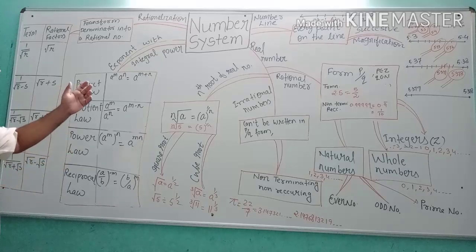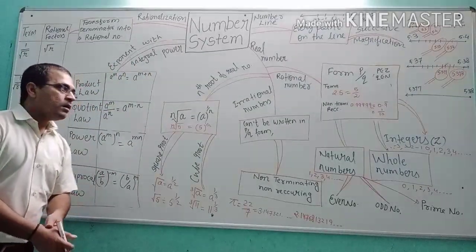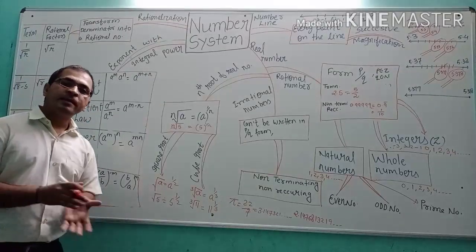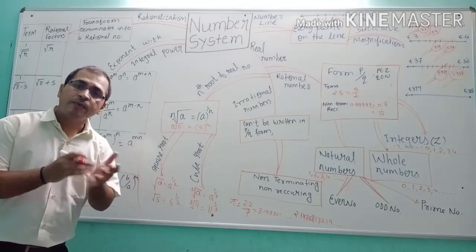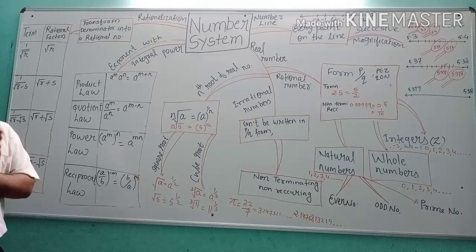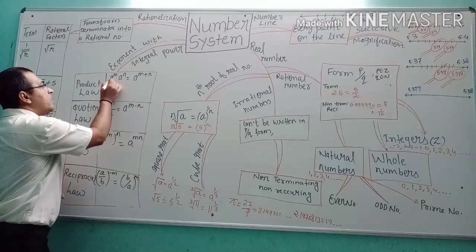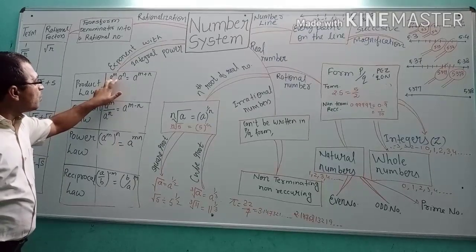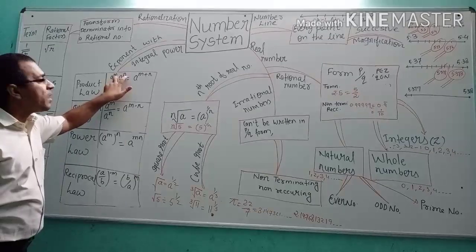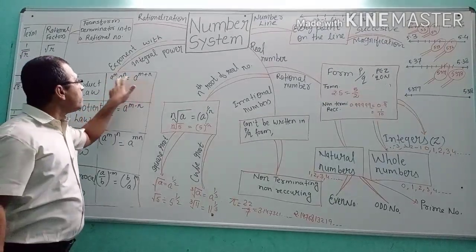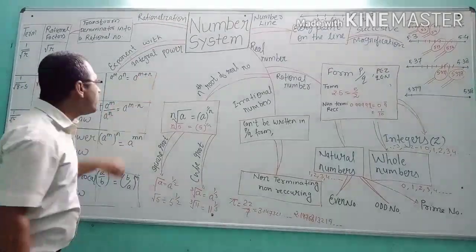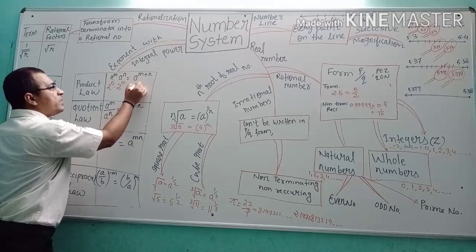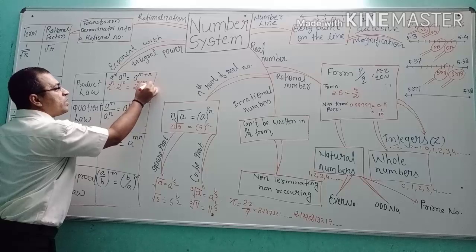Next, exponents with integral power. First is the product law: if there are two similar base numbers with different exponents, multiplying them means the powers are added. For example, 2 to the power 5 multiplied by 2 to the power 10 equals 2 to the power 15.